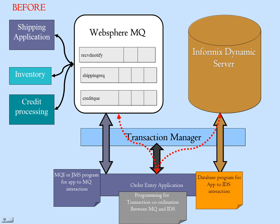Another API is used for MQ — that's MQI if your program is based in C, or JMS if it's in Java. In addition, a new API has to be used to interact with the transaction manager. So this obviously is pretty expensive.